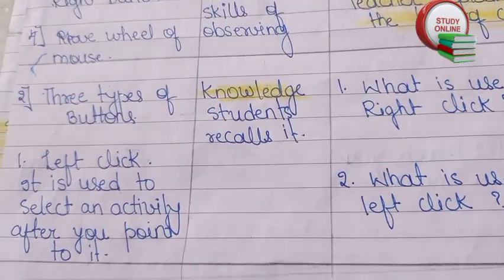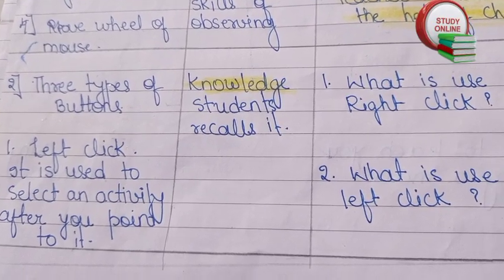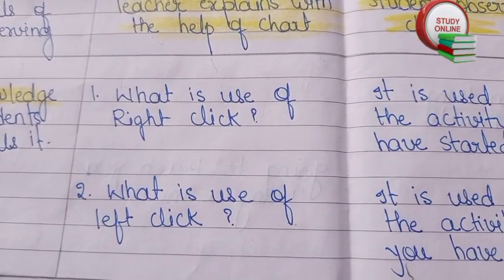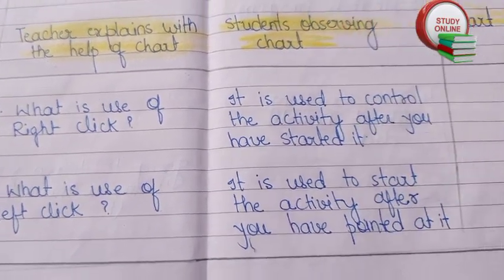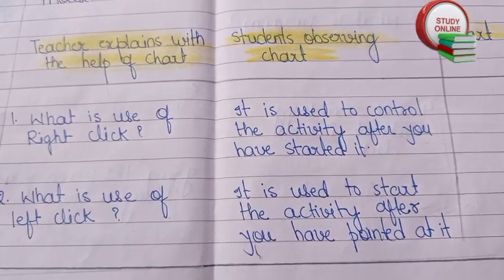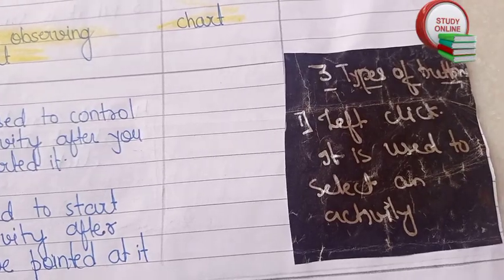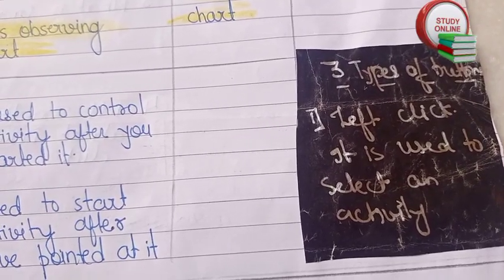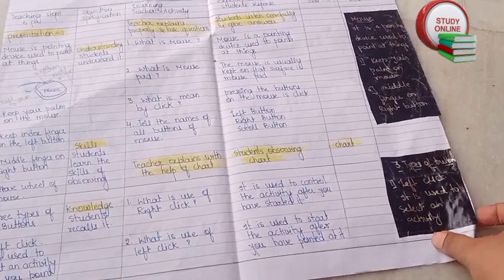In Presentation Two, we have to teach about the three types of buttons — left click and right click. We explain them and then ask questions, with the expected answers that we expect from students shown here. For the blackboard work, we write points like what is left click and what is right click in short sentences.